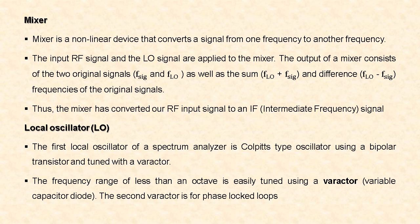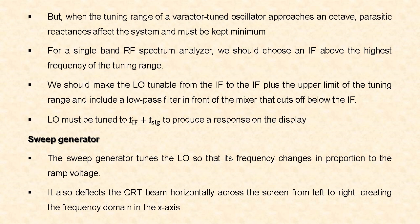Next, the local oscillator. The first local oscillator of a spectrum analyzer is a transistor oscillator using a bipolar junction transistor and tuned with a varactor — a variable capacitor diode. A frequency range of less than an octave is usually tuned using a varactor. A second varactor is used for phase-lock loops. When the tuning range reaches an octave, parasitic reactances affect the system and must be kept minimum. The intermediate frequency should be chosen above the highest frequency of the tuning range, and a low-pass filter in front of the mixer should cut off frequencies below the IF.